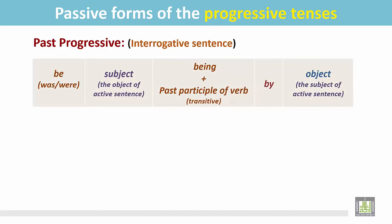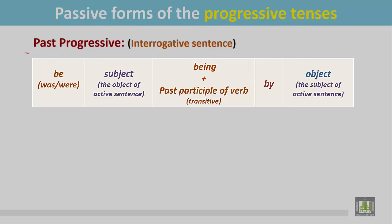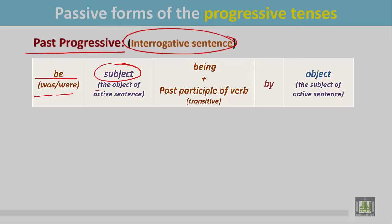See the structure. The structure of the past progressive interrogative sentence is a little bit different. It begins with a be verb. According to the number and person of the subject, use was or were. Then the subject, which is the object of the active sentence. After that, for the progressive tense, use being with the past participle form of the transitive verb.